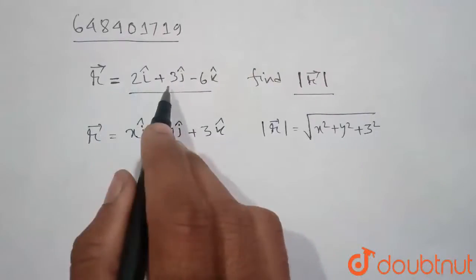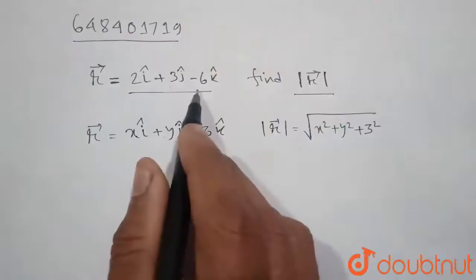So here the value of x is 2, value of y is 3, and value of z is minus 6.